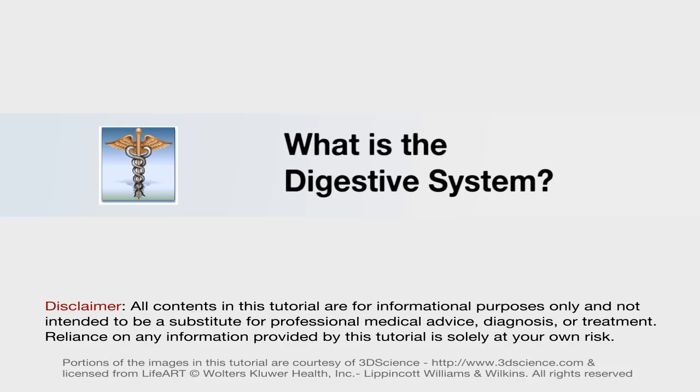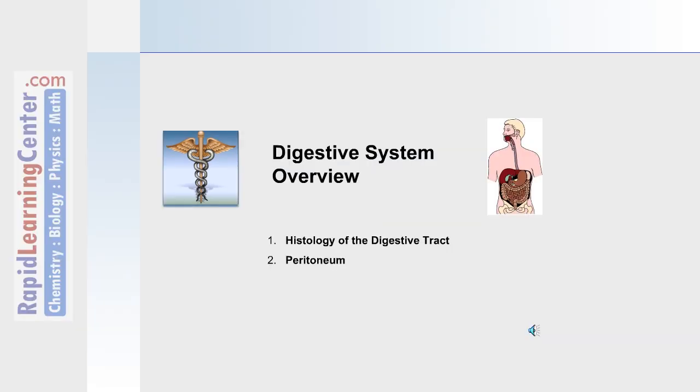Let's begin with a digestive system overview, including the histology of the digestive tract as well as the peritoneum.